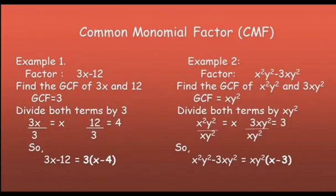And then 3xy squared over xy squared: we cancel x and y squared, so we have 3. Therefore, the factored form is xy squared times the quantity x minus 3.